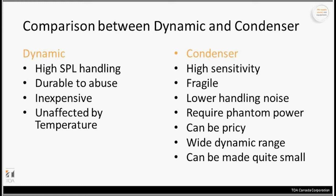Comparing dynamic and condenser: as a rule of thumb, dynamics can generally handle a higher SPL — loud environments. For example, a kick drum produces very high sound pressure levels, so that's generally going to be a dynamic microphone. Dynamics are also more durable because there are fewer electronics, so they can handle a little more abuse — like being dropped in a school gym or used as a stage microphone. They are generally less expensive and less affected by temperature.